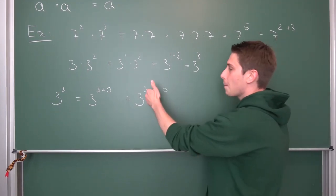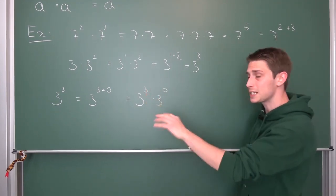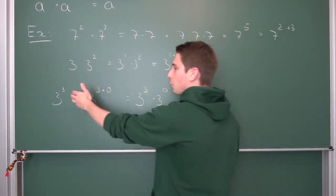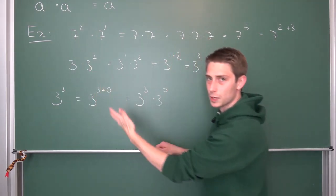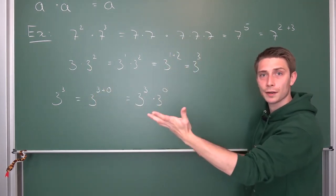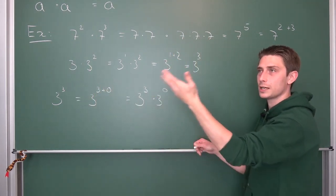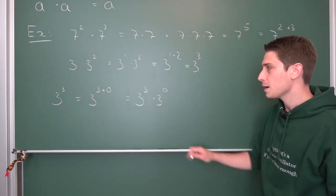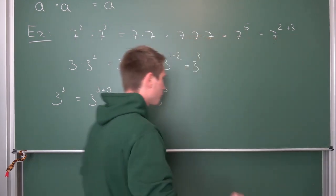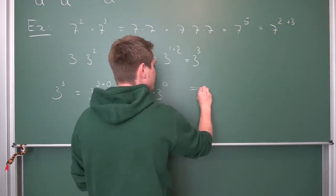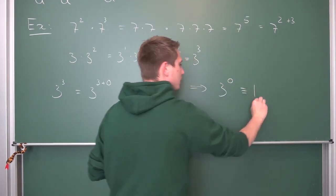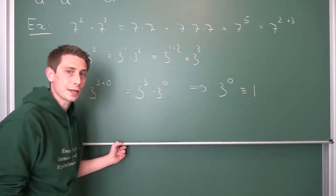Well, it's got to be 1. You can also divide both sides by 3 cubed — it's not equal to 0. Then you have, for example, 27 over 27, which is going to be 1 if you look at fractions. Meaning, 3 to the 0 power, we can conclude, is thus exactly 1.